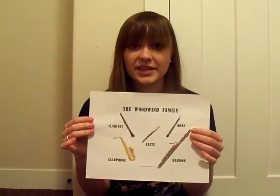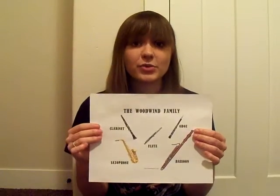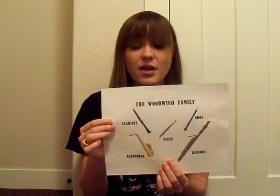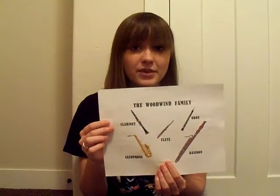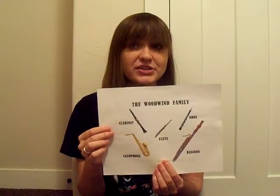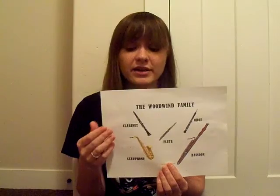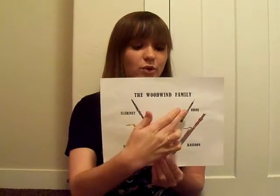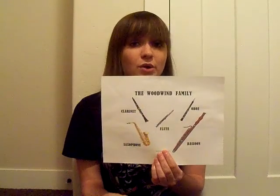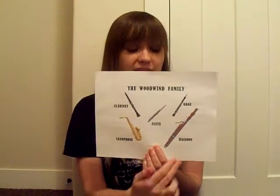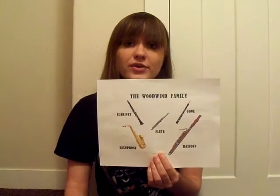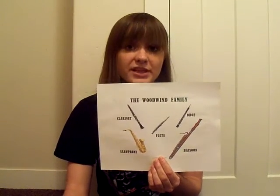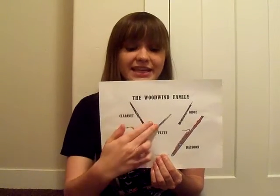In the woodwind family, the musician will blow air into the instruments as well, but this time they'll be blowing into a reed, like the clarinet, the saxophone, or the oboe, or into a double reed, like the bassoon, or they also blow across the top of the opening of the instrument, like in the flute.